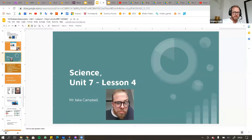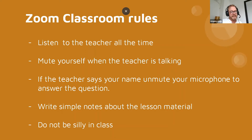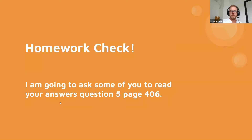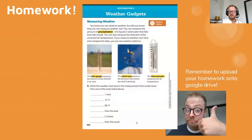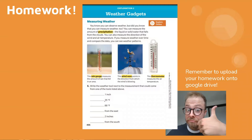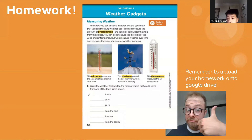All right, class. We're going to go over the rules, and then we're going to do a little share of the homework. Homework check. Your homework was to finish this. So I'm going to go through each student. Write the weather tool next to the measurement that could come from one of the tools listed above. Steve, what can I put here? Rain gauge. Rain gauge. Good.